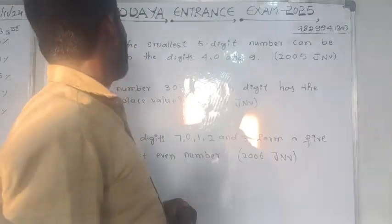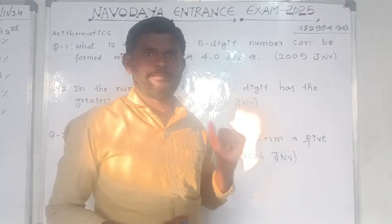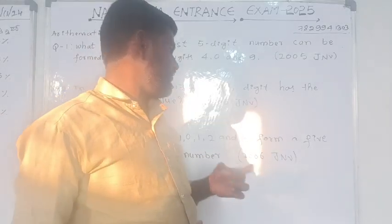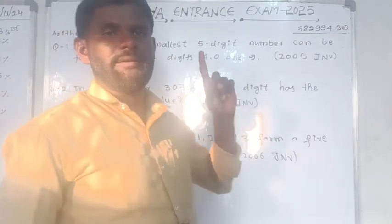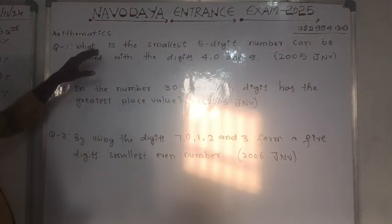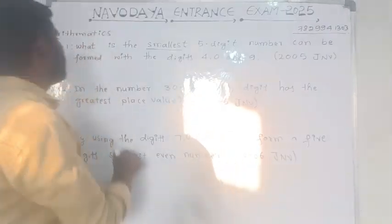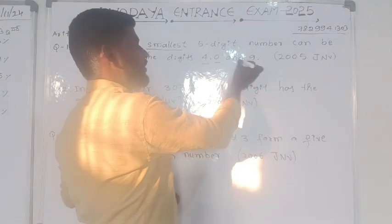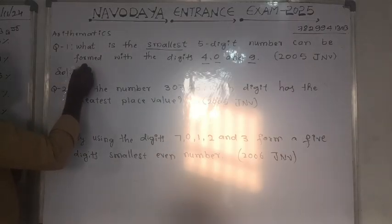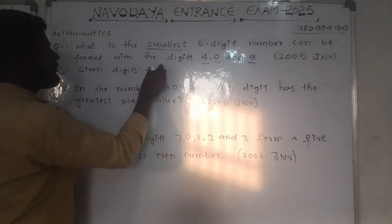Dear students, now the entrance exam 2025 preparation classes — especially only question paper. I have taken three questions from 2005 JNV and 2006 JNV old question papers, first chapter: number and number system. Let's come to the first question. What is the smallest 5-digit number that can be formed with the digits 4, 0, 9? The given digits are 4, 0, 9.